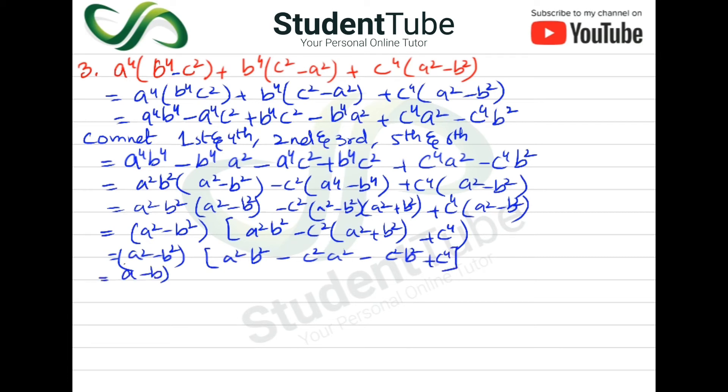This becomes (a-b)(a+b). Taking a^2 common gives us (b^2-c^2). Taking negative c^2 common also gives (b^2-c^2). So we have (a-b)(a+b) and (b^2-c^2) appearing as factors.